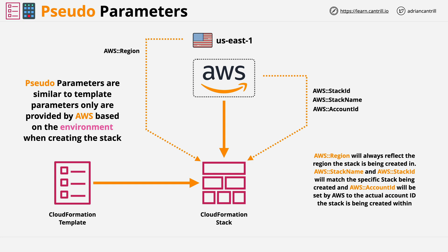Both types of parameters are useful in ensuring that a template is portable and can adjust based on input from the person or process creating the stack. Static templates are much less flexible, and this functionality goes a long way to removing the negative aspects of static templates. From a best practice perspective, you should aim to minimise the number of parameters which require explicit input — wherever possible use defaults, and where possible get values from AWS rather than whoever is implementing the stack. In the videos which follow, you'll get the chance to experiment with all of these features in some demos — I'm introducing the theory first, and then you'll get the chance to experience it yourself.